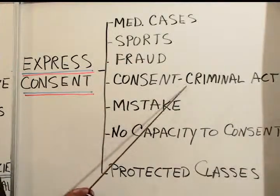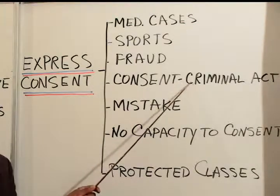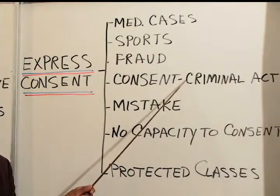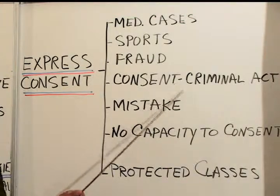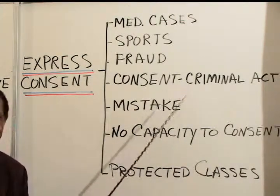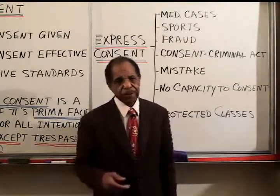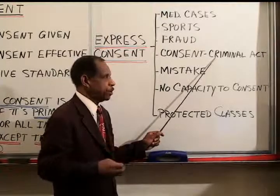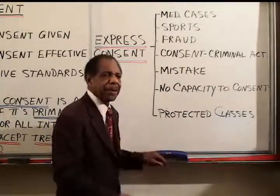Consent to criminal act: this comes up when people agree to do mutual combat and each person has consented to engage in a criminal act. The majority view is that people cannot consent to violate the law, and therefore neither of their consents is valid — each person, even though they agreed to the mutual combat, can sue the other for assault and battery. The minority view is that the consent is effective. Some jurisdictions say you can consent to this criminal act and that prevents the civil cause of action; others say you cannot.